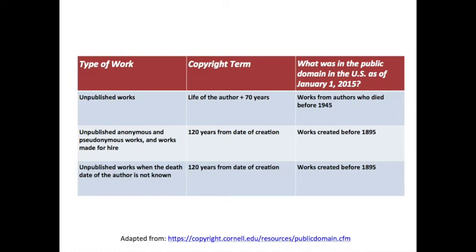Two things on this chart worth noting. For unpublished works when you know information about the author, the copyright term is the life of the author plus 70 years. As of January 1, 2015, works from authors who died before 1945 were considered in the public domain. And for unpublished works when the death date of the author is not known, the standard is 120 years from the date of creation — so in 2015, works created before 1895 that are unpublished would be in the public domain.